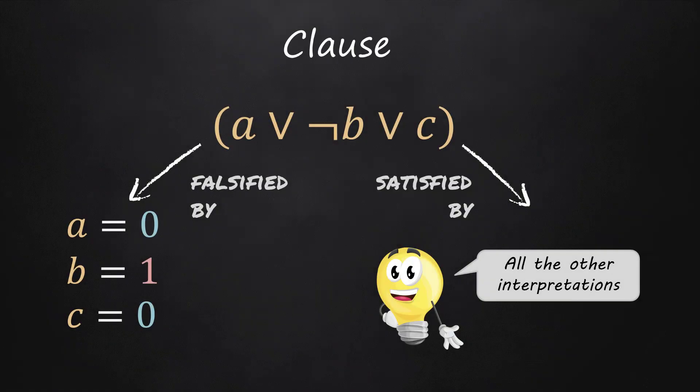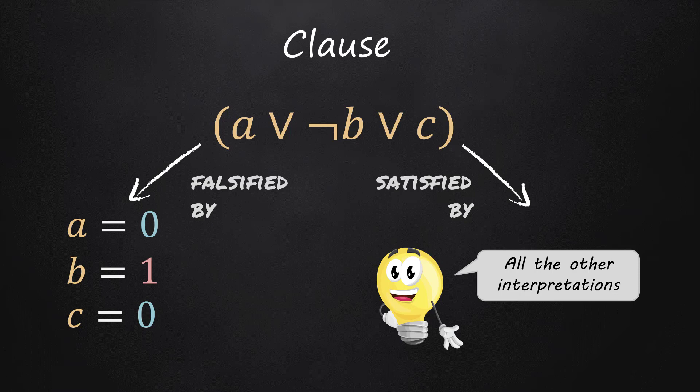A non-empty clause is a disjunction of literals, namely either a literal or several literals connected by logical or operators. Such a clause is said to be falsified by any interpretation that falsifies all its literals. It is said to be satisfied by any interpretation that satisfies at least one of its literals.